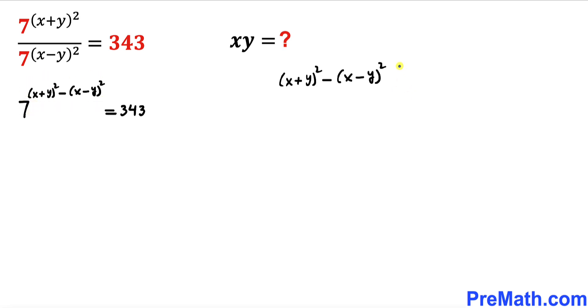And now let's focus on this whole exponent of 7. Let's recall this identity: (a+b)² could be written as a² + 2ab + b². I'm going to apply it on this binomial. So therefore this could be written as x² + 2xy + y² minus...